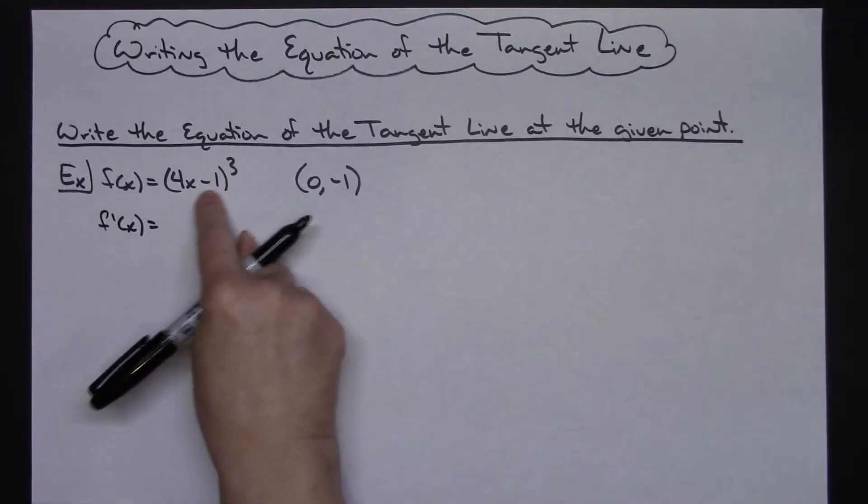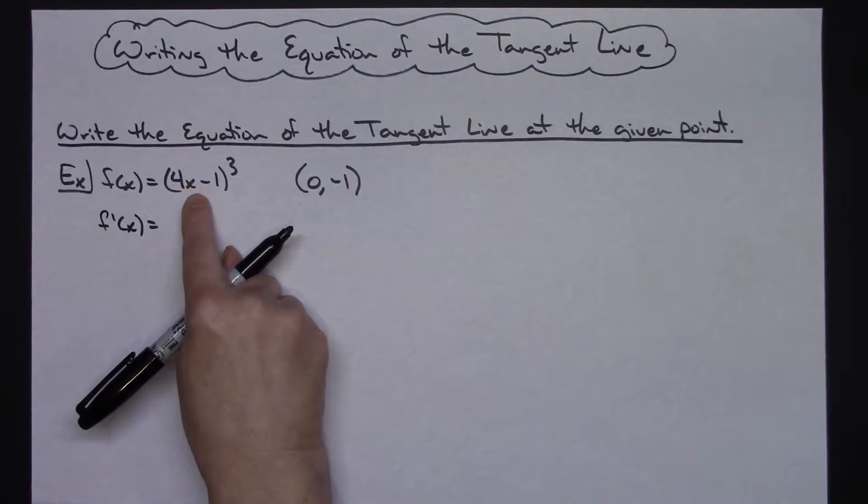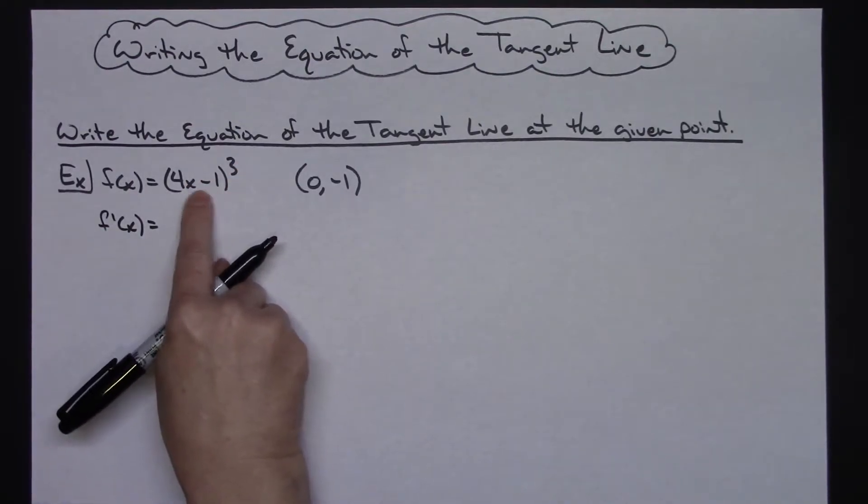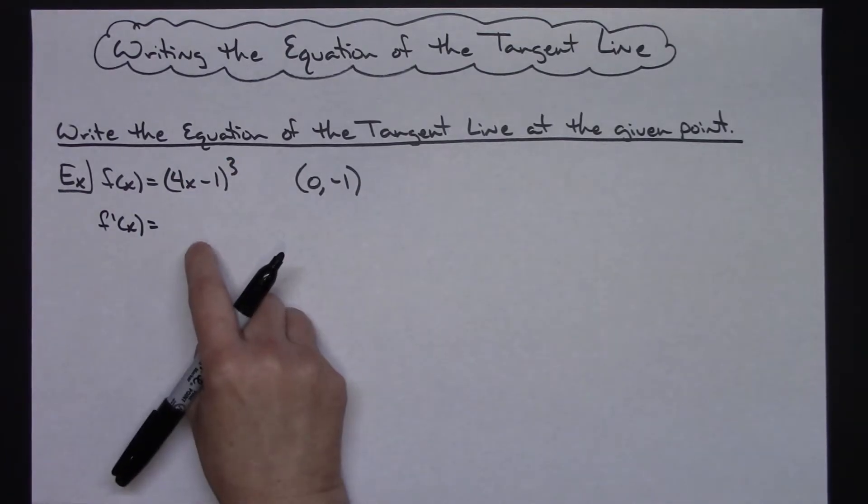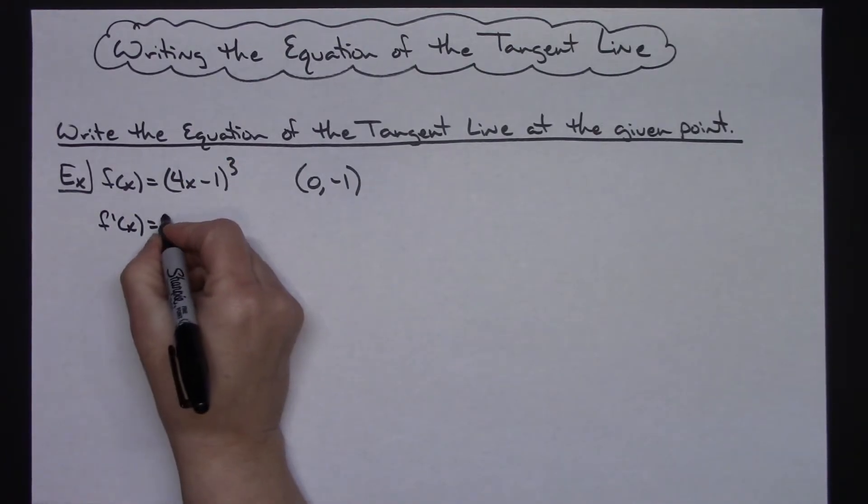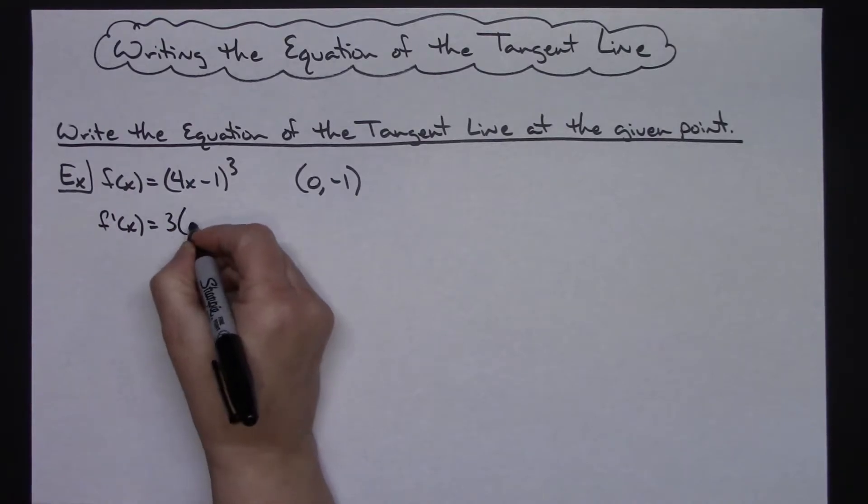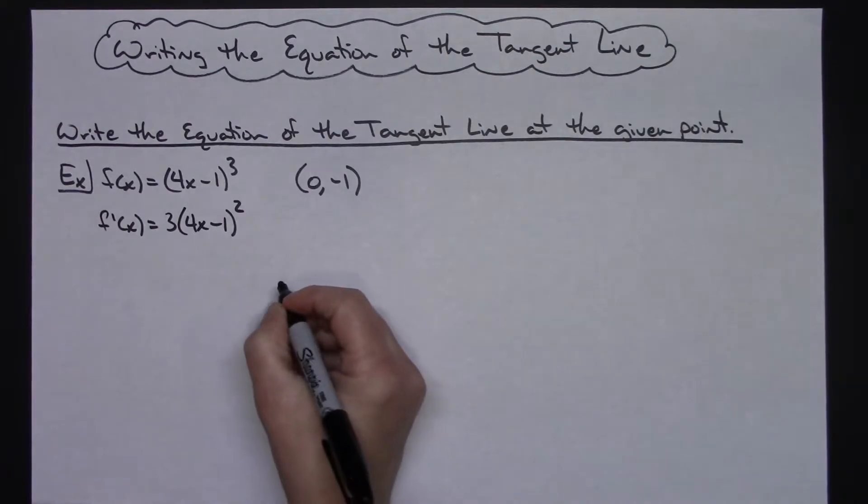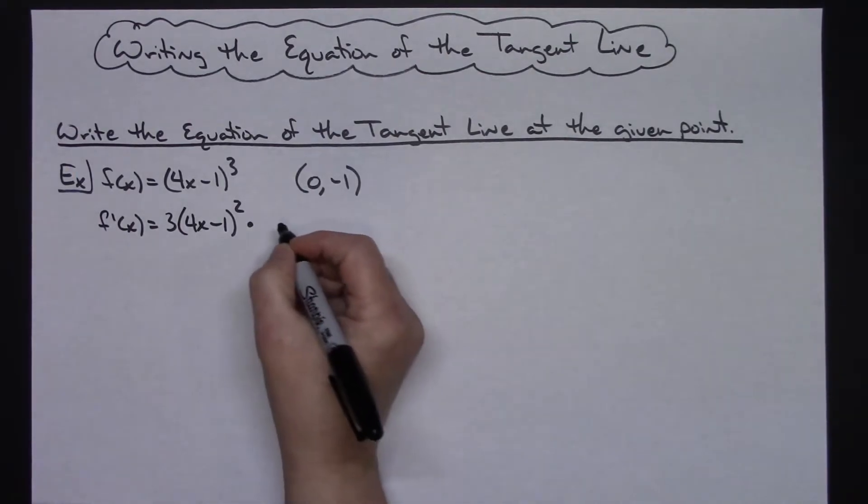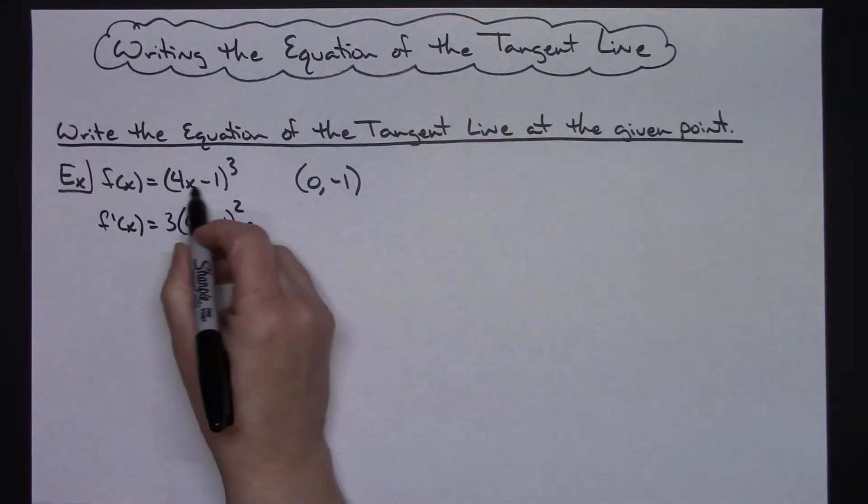So the derivative of this function: my outside function is x³, my inside function is 4x - 1. Since my outside function is x³, I'm going to use power rule. I'm going to pull that 3 down in front, so 3(4x - 1)² and then multiply it times the derivative of the inside function.